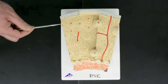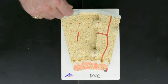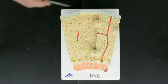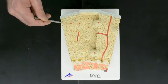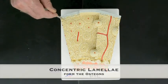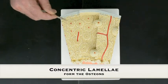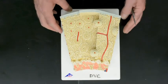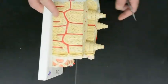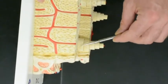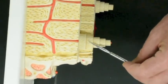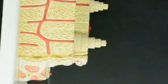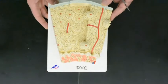Next we come to the lamellae. Around the outside we have circumferential lamellae, and then further in we have these concentric lamellae which form the osteons. If we turn it slightly, we can see that the orientation of the collagen fibers is in a different direction in each concentric layer, which helps give the bone strength.